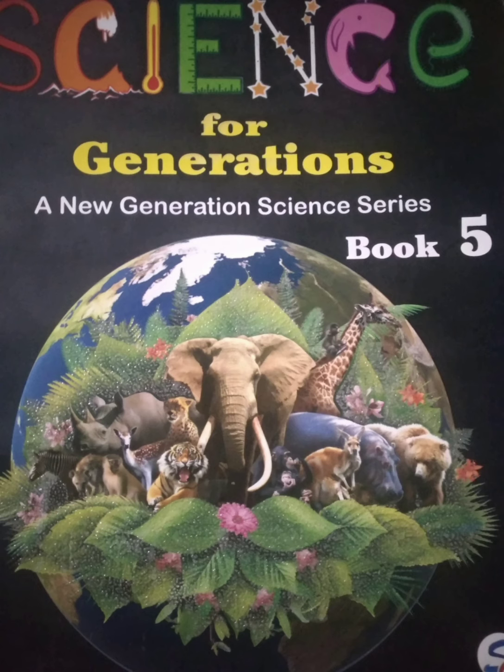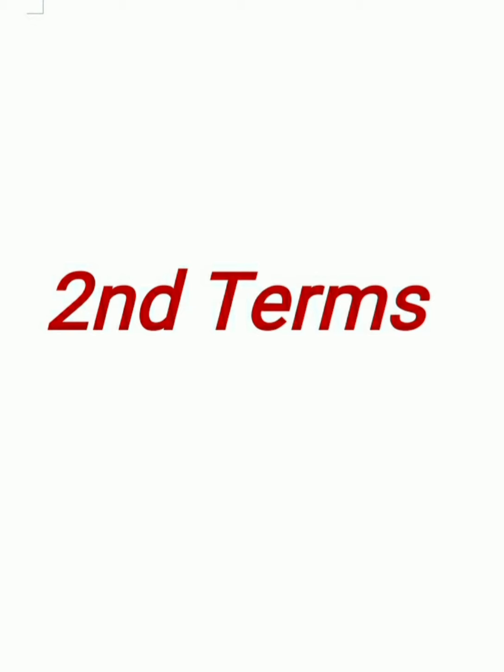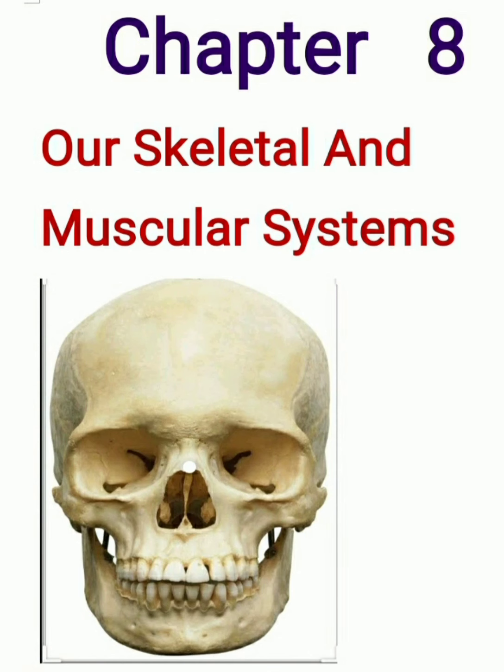In second term, your Unit 3 will start. Unit 3 is 'The World of Living,' and the name of your chapter is 'Our Skeletal and Muscular System' — hamara kankaal aur maanspeshitantra. The chapter name is: Our Skeletal and Muscular System.